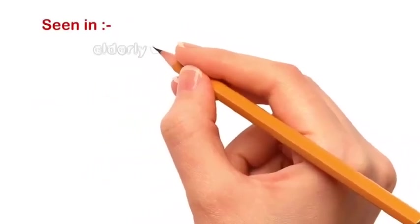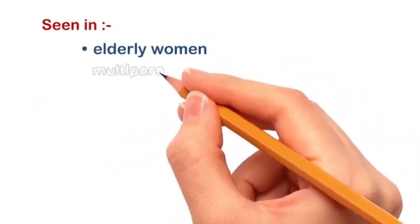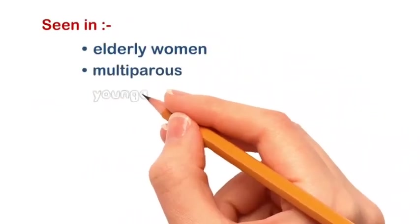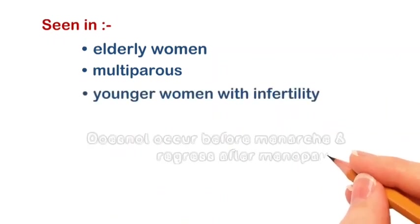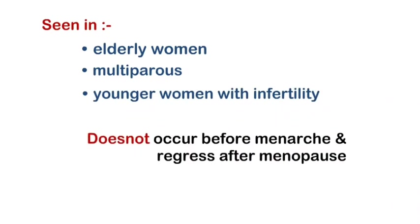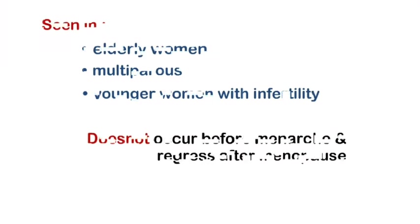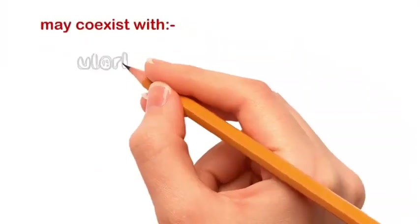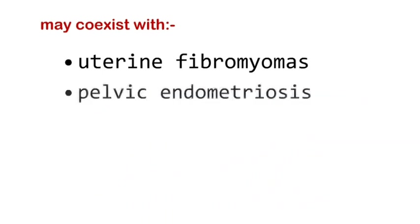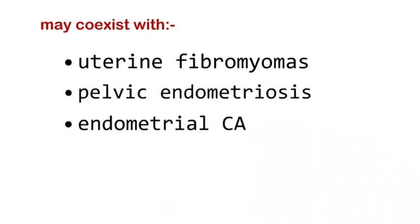Adenomyosis is mostly seen in elderly women, multiparous women, and young women with infertility. It usually does not occur before menarche and regresses after menopause. This condition may be seen coexisting with uterine fibromyomas, pelvic endometriosis, and endometrial carcinoma.